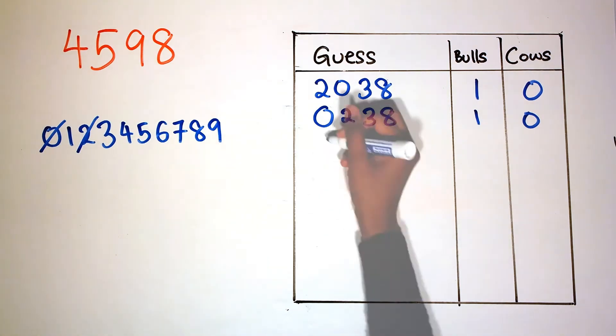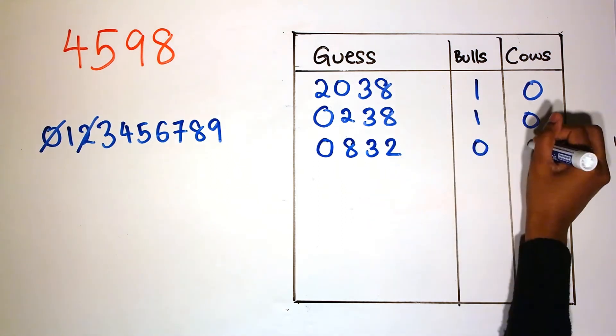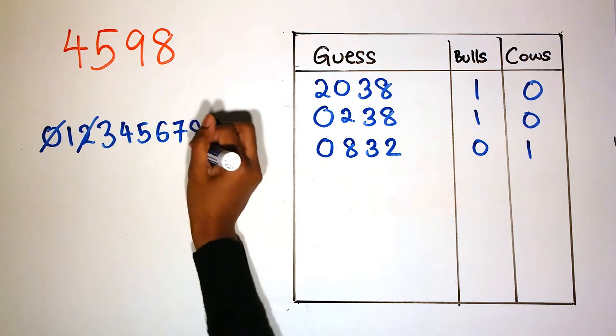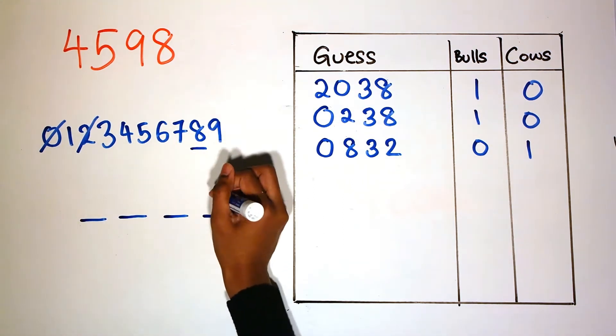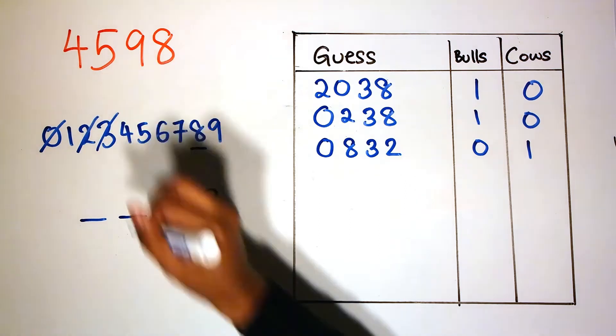My next guess is 0832 and I will get one cow. If the one bull transforms into one cow, it means the number that I switched positions with from my previous guess would be the bull, so 8 was already in the right place. We could then cross out 3 as a possible number.